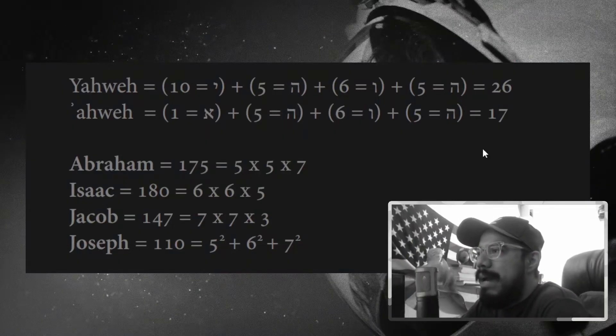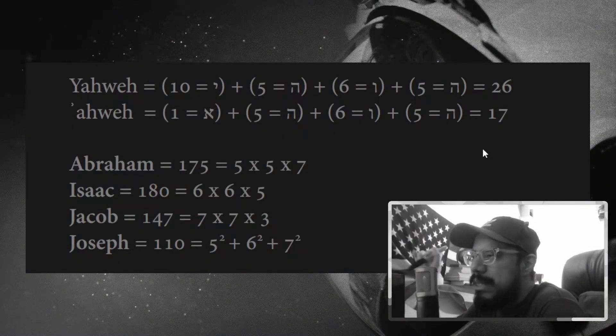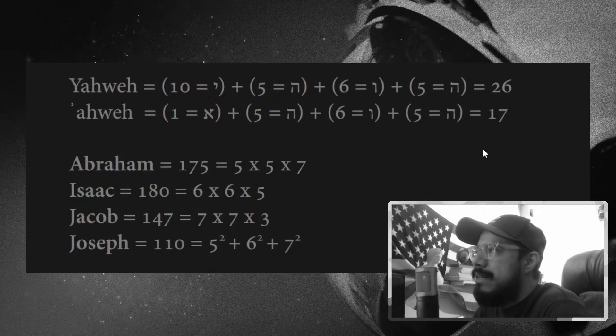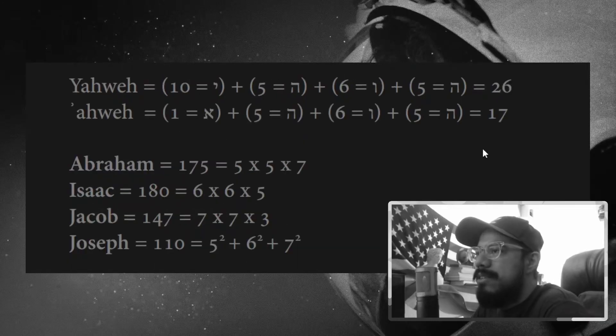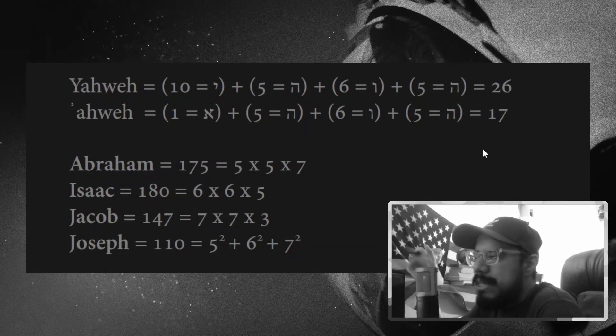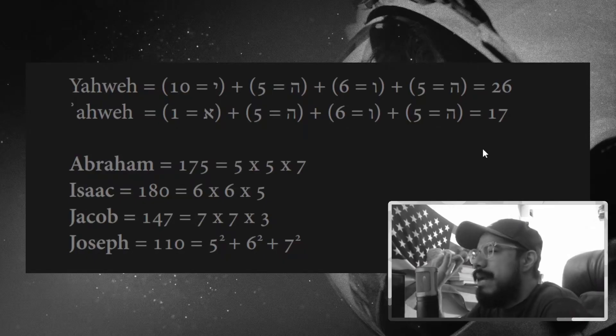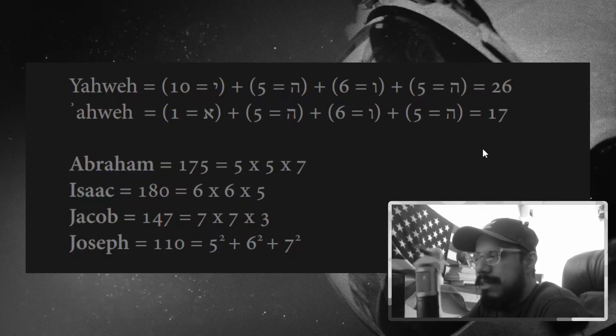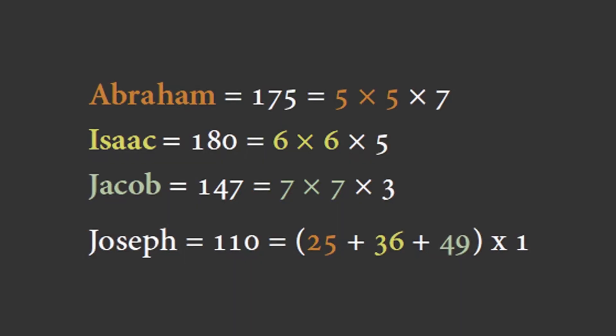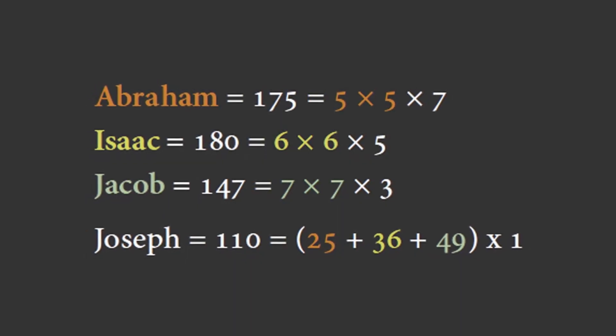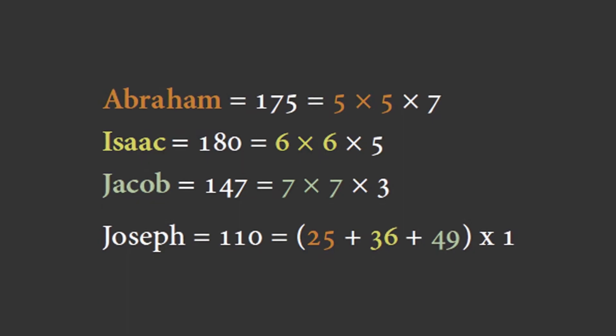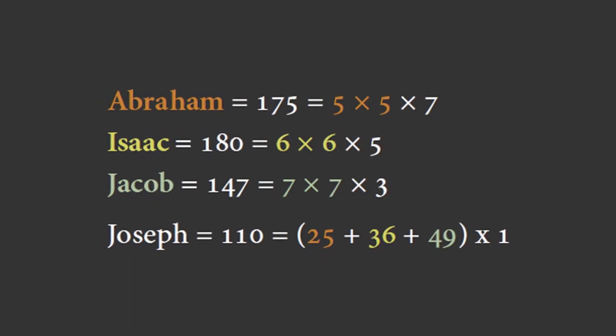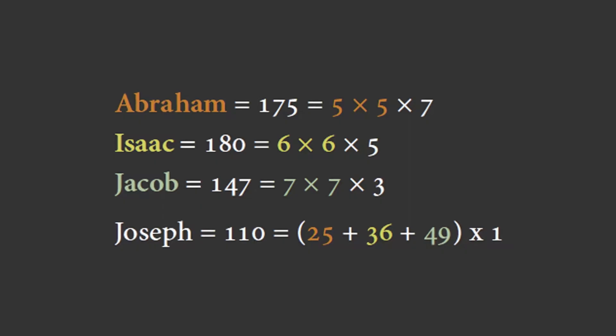Today I wanted to finally loop back around to some of this stuff. In the past, commentators had noticed this interesting mathematical thing going on between the patriarchs. Abraham's lifespan, his 175 years, can be arrived at 5 squared times 7. Now where things get interesting is Isaac, his son, his lifespan can be arrived at 6 squared times 5. And then his son, Jacob, 7 squared times 3.